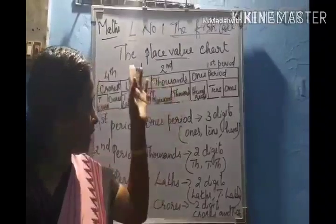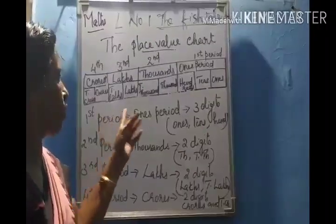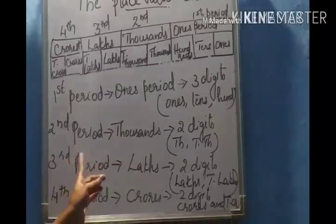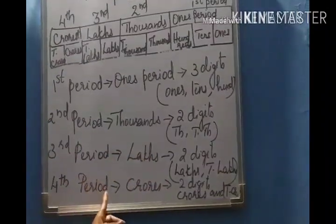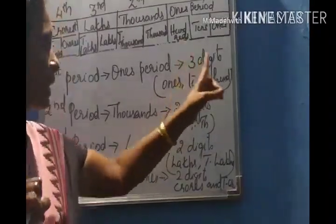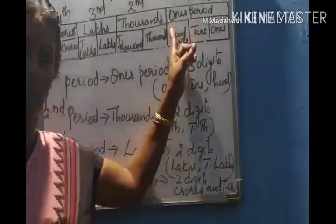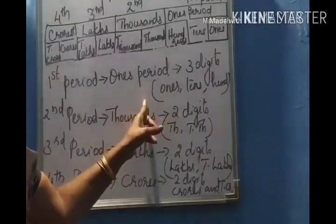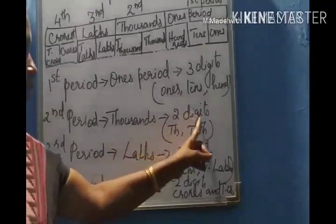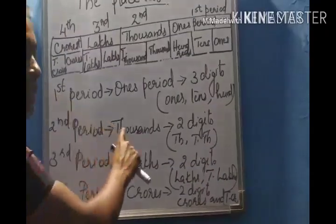This place value chart is also divided into 4 periods. The first period is called the ones period. The second period is the thousands period. The third period is the lakhs period, and the fourth period is the crores period. The first period — the ones period — consists of three digits: ones place, tens place, and hundreds place. The thousands period includes thousands and ten thousands, meaning only two digits.